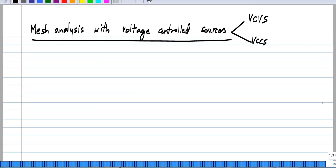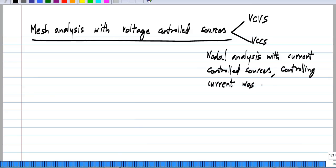Now, if you recall when we had nodal analysis with current controlled sources, the controlling current was restricted to be through resistors.